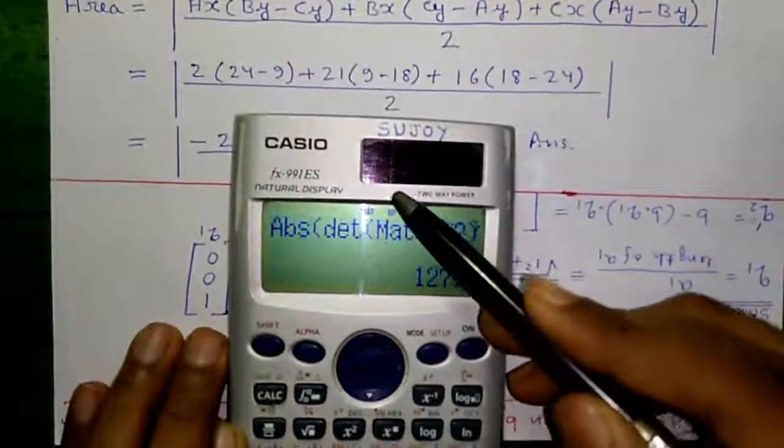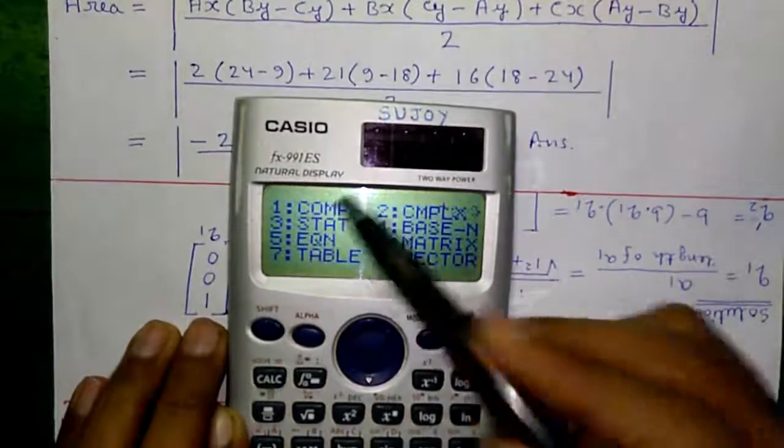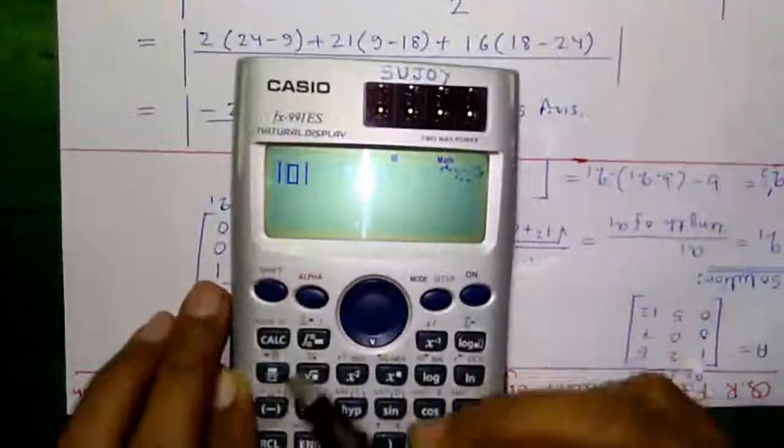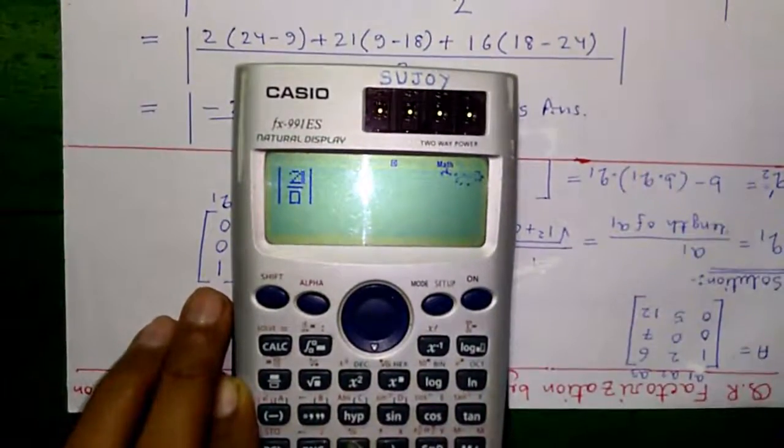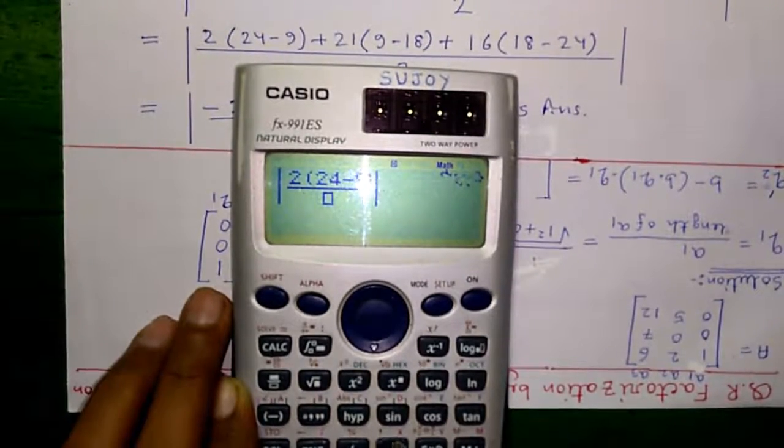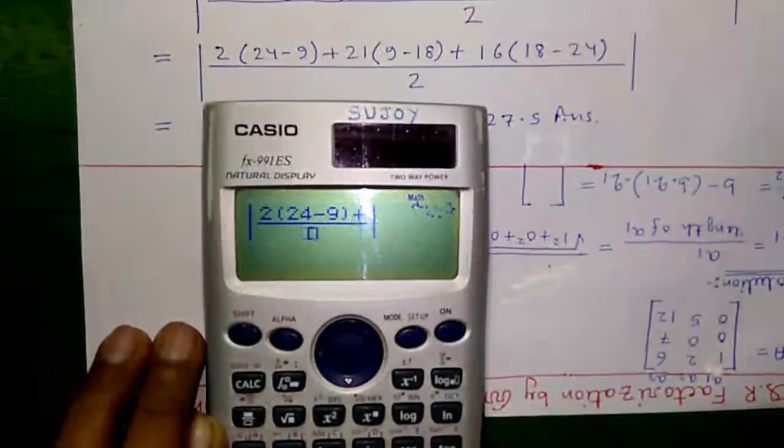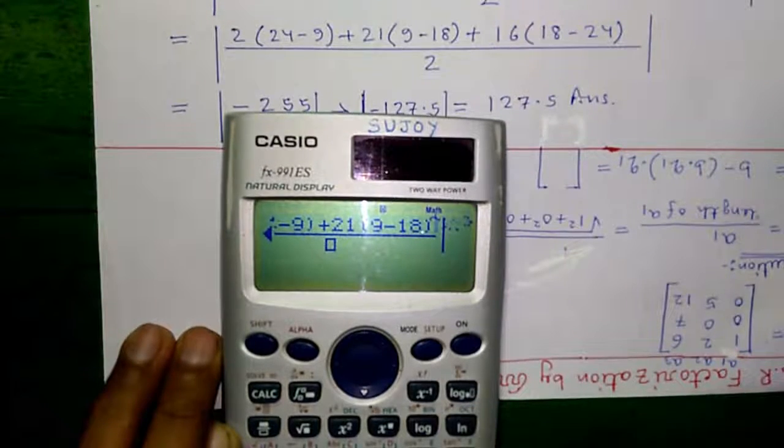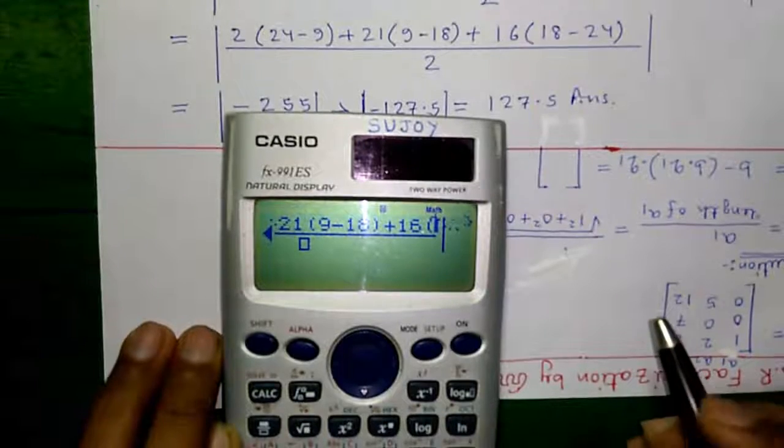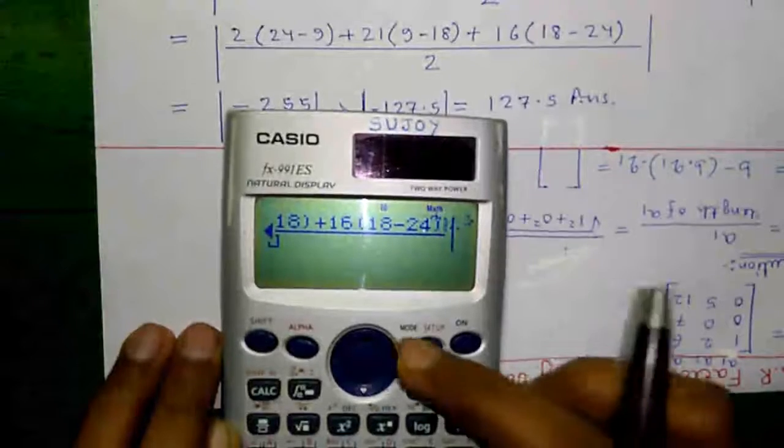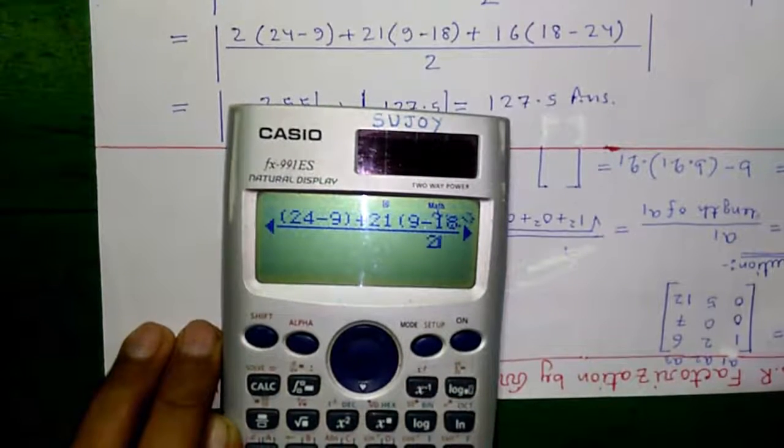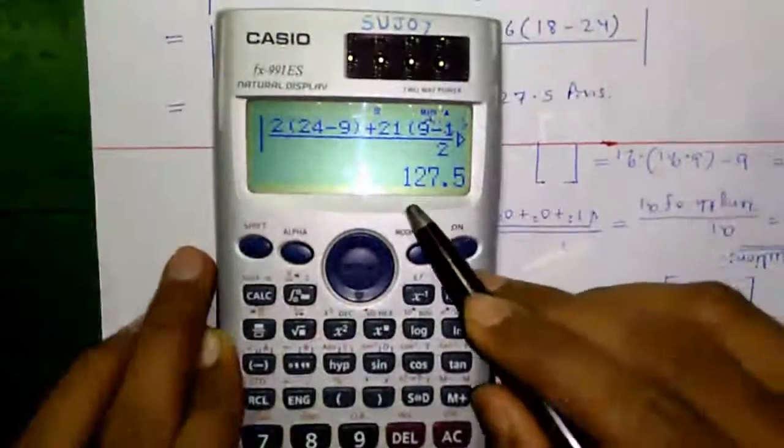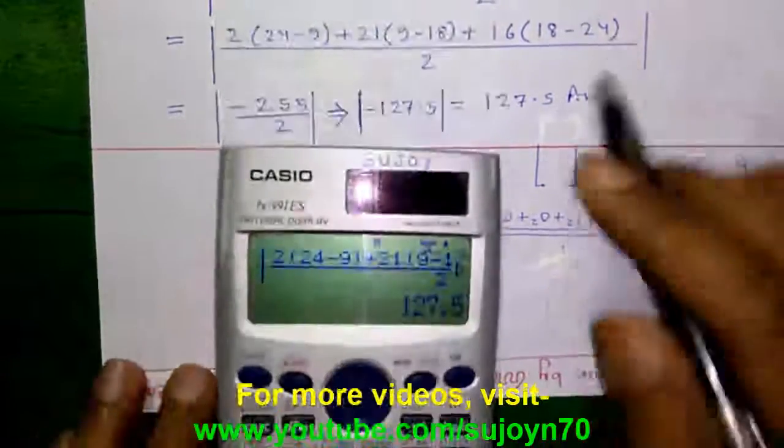You can also implement this formula on this calculator. For that, press mode and 1 for computational mode. And now press shift and hype button to get absolute operator. Press this fraction button to bracket open 2 into bracket open 24 minus 9 bracket close plus 21 bracket open 9 minus 18 bracket close plus 16 into bracket open 18 minus 24 bracket close divided by 2 and press equals to. That's equal to 255 by 2. Press S to D button to get the actual value which is 127.5 which is this value.